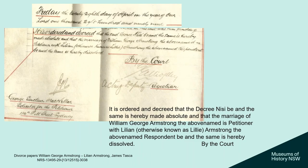This is an extract from that same divorce file, ordering the decree nisi be made absolute and the marriage be dissolved. It is dated Friday the 28th day of April in the year of our Lord 1899. The quote reads: 'it is ordered and decreed that the decree nisi be and the same is hereby made absolute and that the marriage of William George Armstrong, the above-named petitioner, with Lillian (otherwise known as Lily Armstrong), the above-named respondent, be and the same is hereby dissolved by the court.' The petition for divorce has been approved and the marriage is now effectively dissolved.